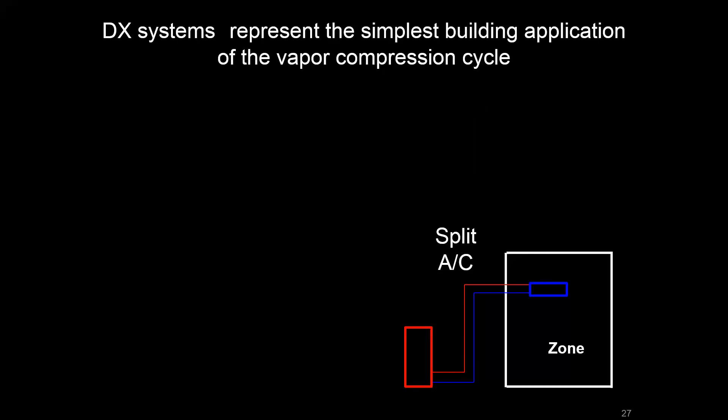We'll start out looking at air conditioning equipment by looking at a DX system. This represents the simplest type of air conditioning system using the vapor compression cycle.